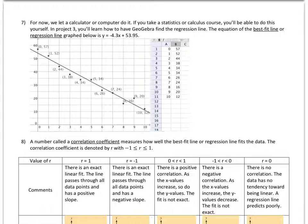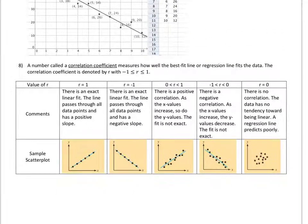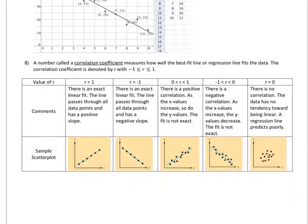A number called a correlation coefficient measures how well the best fit line or regression line fits the data. The correlation coefficient is a number between negative 1 and 1. We call it r. And here's a little summary of what the different values of r can tell you. When r is equal to positive 1, that means a perfect linear fit and positive slope. When r is negative 1, perfect linear fit but negative slope.